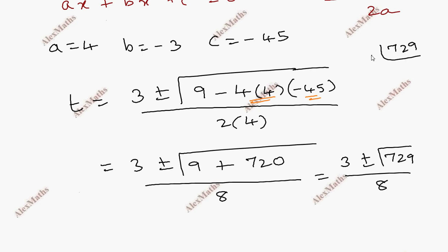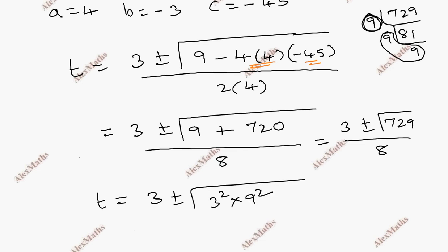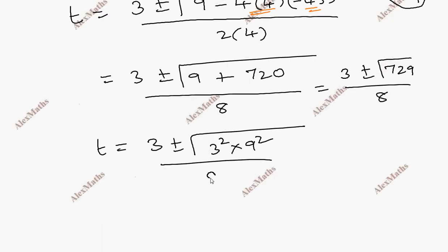That gives us 3 plus or minus the square root of 9 plus 720, which is the square root of 729, all divided by 8. Now we factorize 729: the square root of 729 is 27. So the square root is resolved to 27.